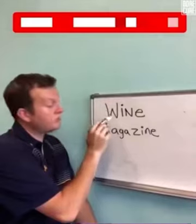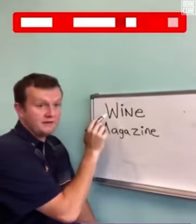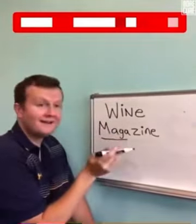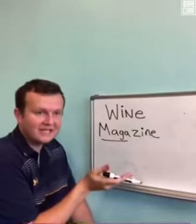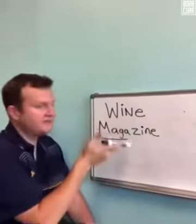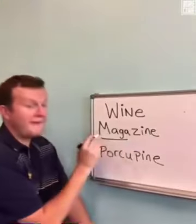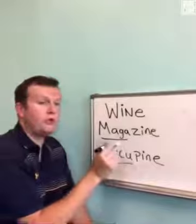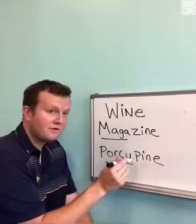So if this word is wine, this word would be... maga. It'd be... magazine? Magazine. That's all right, I'll give you another one. So if this is magazine, this word would be porcu... Porcupine? Porcupine.